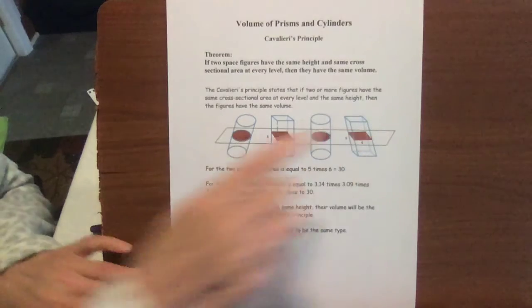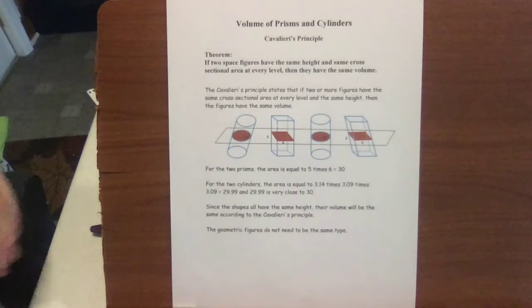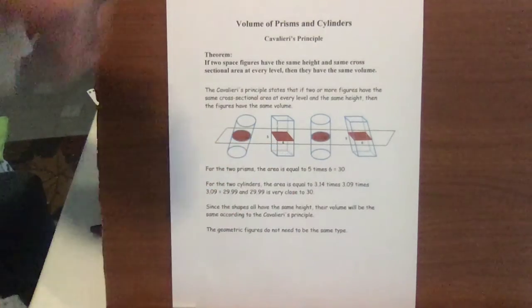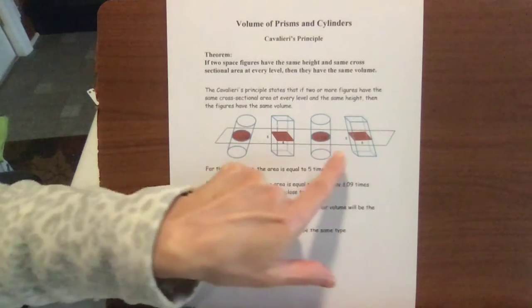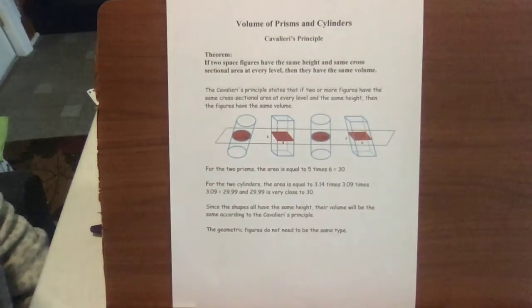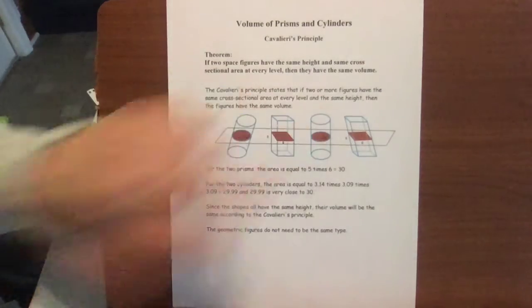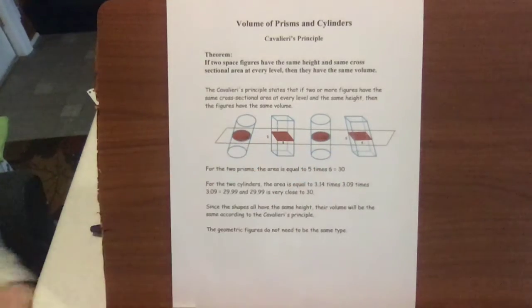So each one of these cross-sections, although difficult to see, each one comes out to be an area. Each cross-section has an area of 30. The circles' cross-sections are about 29.99, so close enough to 30. So as these are all the same height, they all actually have the same volume because their cross-section areas are all 30.